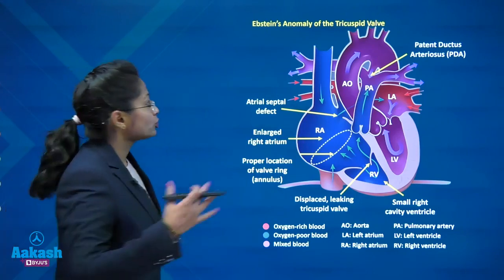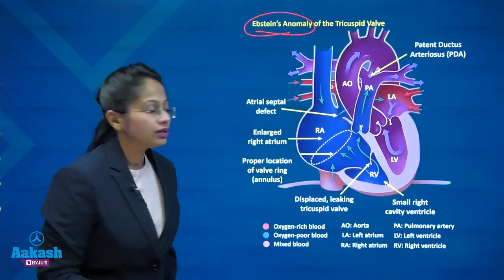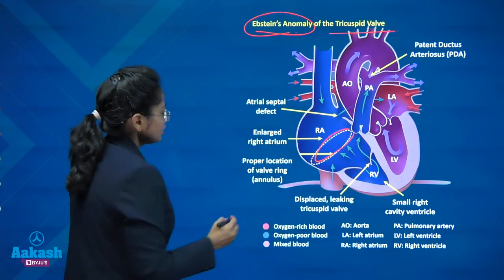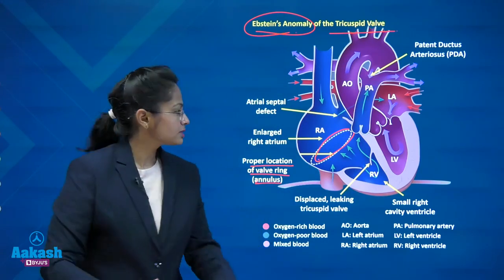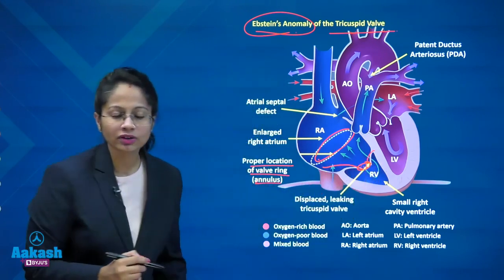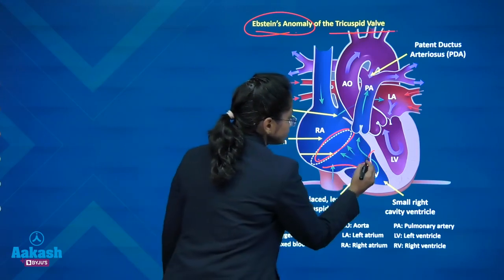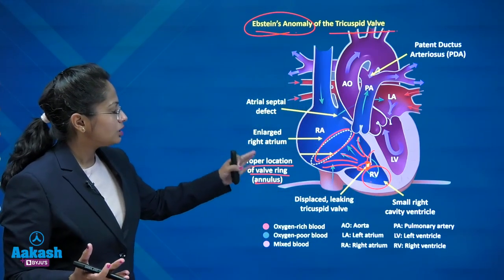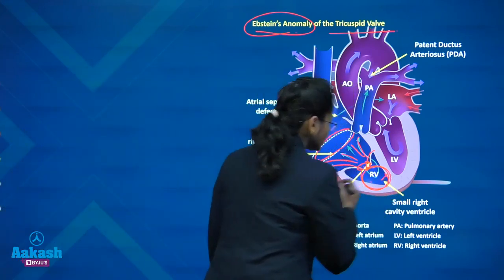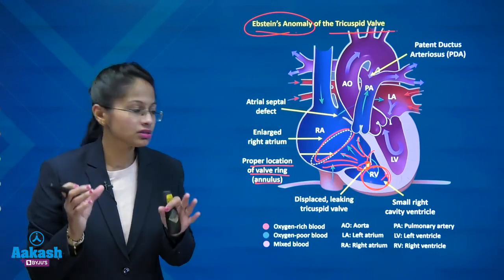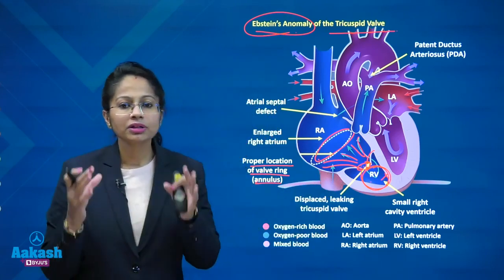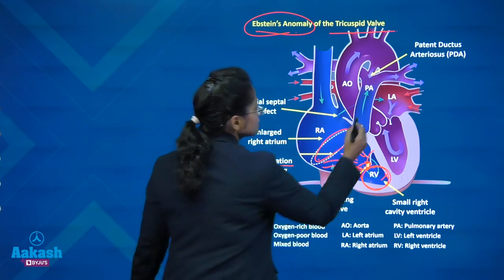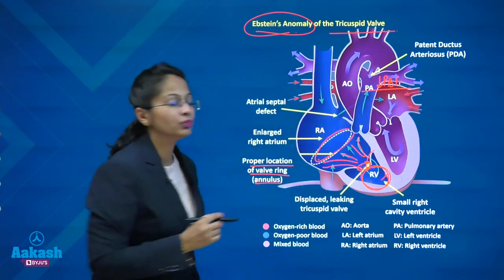In Ebstein anomaly, there is downward displacement of the tricuspid valve. This causes the right atrial size to increase, atrialization of the right ventricle, and a decrease in right ventricular size. The right ventricle becomes non-functional, leading to functional pulmonary stenosis and right ventricular outflow obstruction — resulting in decreased pulmonary blood flow. So Ebstein anomaly is associated with decreased pulmonary blood flow.